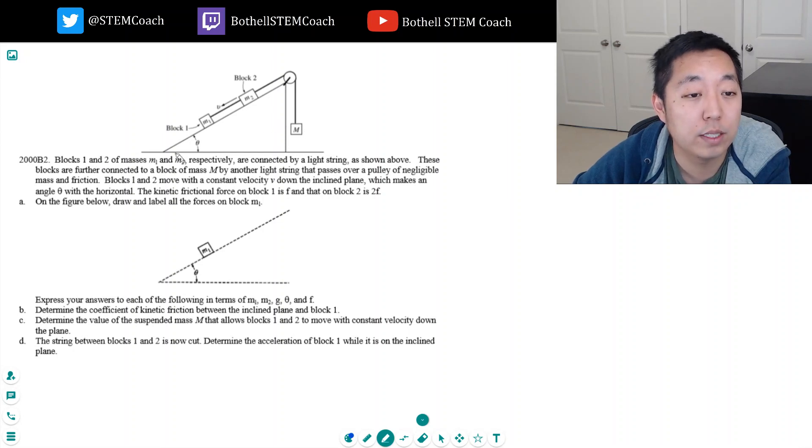Blocks 1 and 2 of masses M1 and M2 are connected by a light string as shown above. These blocks are further connected to a block of mass M by another light string that passes over a pulley of negligible mass and friction. Blocks 1 and 2 move with a constant velocity V down the inclined plane, which makes an angle theta with the horizontal. The kinetic frictional force on block 1 is F and on block 2 is 2F. On the figure below, draw and label all the forces on block M1.